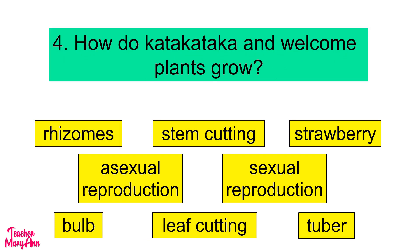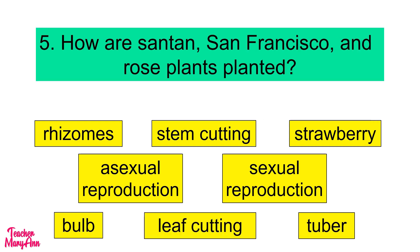Number 4: How do katakataka and welcome plants grow? The answer is through leaf cutting. Next, how are santan, san francisco, and rose plants planted? They are planted through stem cutting.